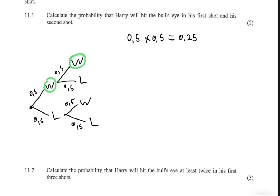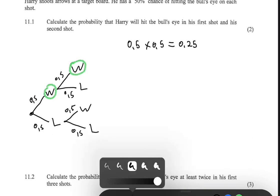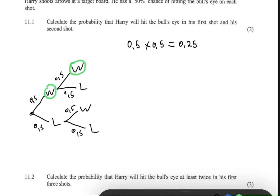There are different ways in which that can occur. He can hit the bull's eye in his first two shots, in his last two, or on his first and his last. So let's add probabilities for the third shot on our tree diagram.